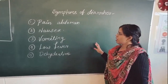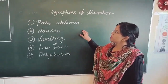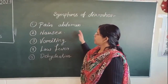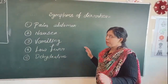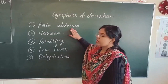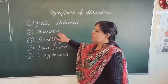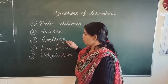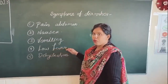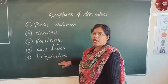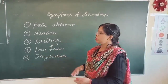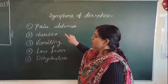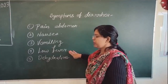After the main causes of diarrhea, the next point is the symptoms of diarrhea. The first symptom is abdominal pain. You feel pain in your abdomen. Next is nausea — nausea means you feel like you need to check yourself. Third is vomiting. A little fever is also felt. Dehydration is another symptom. So the symptoms of diarrhea are: abdominal pain, nausea, vomiting, low fever, and dehydration.